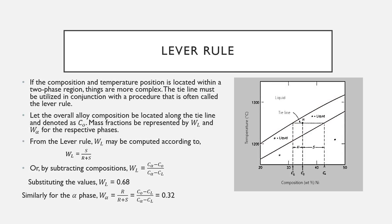Lever rule: the relative amounts of phases present at equilibrium may also be computed with the aid of phase diagrams. For the single-phase region, the phase fraction is 1.0 (100%). For example, the 68% Ni / 48% Cu alloy at 1100°C is 100% alpha phase. If the composition and temperature are located within a two-phase region, the tie line must be utilized in conjunction with the lever rule, which is applied as the tie line is constructed across the two-phase region.